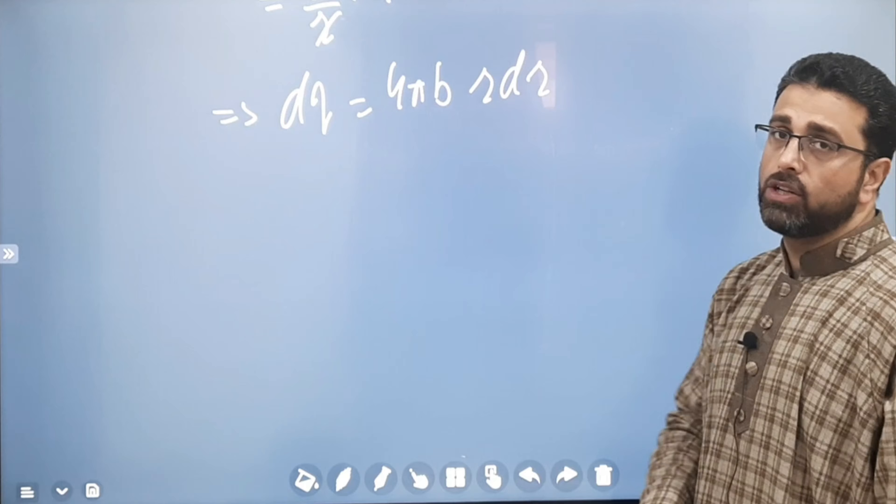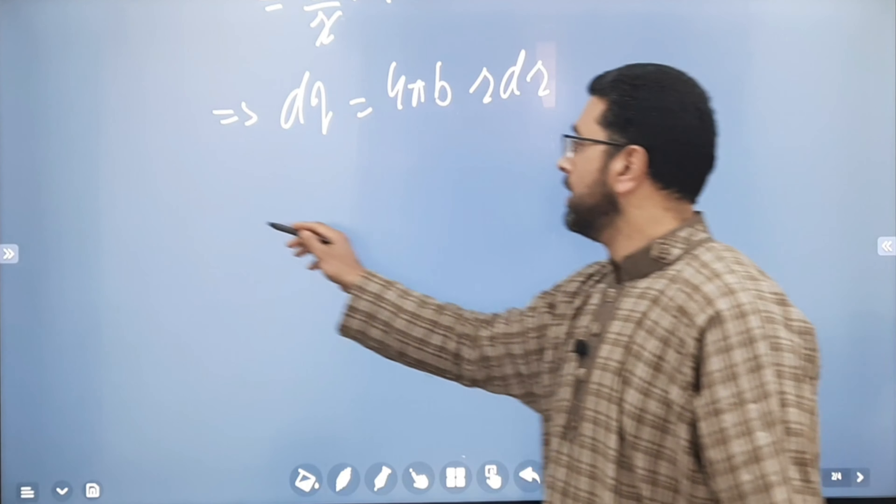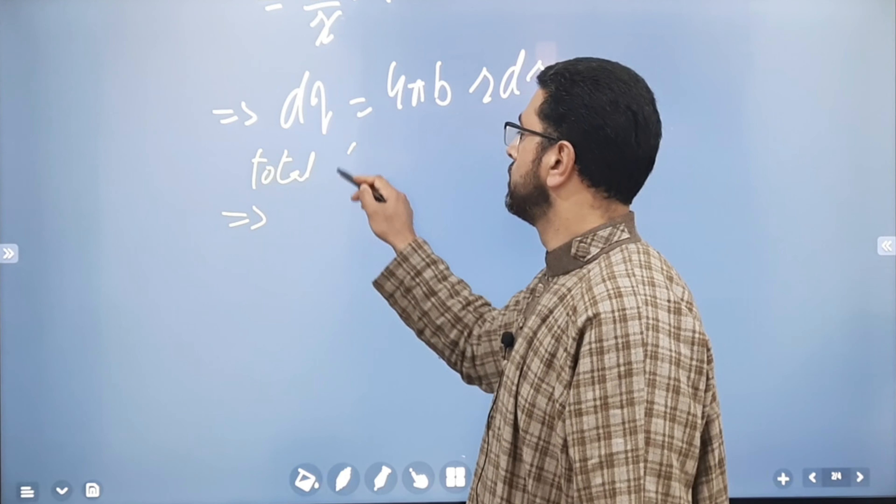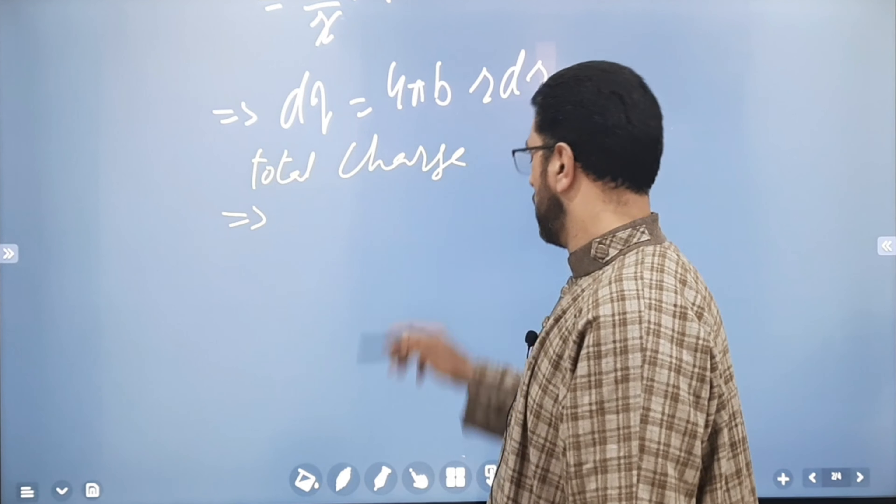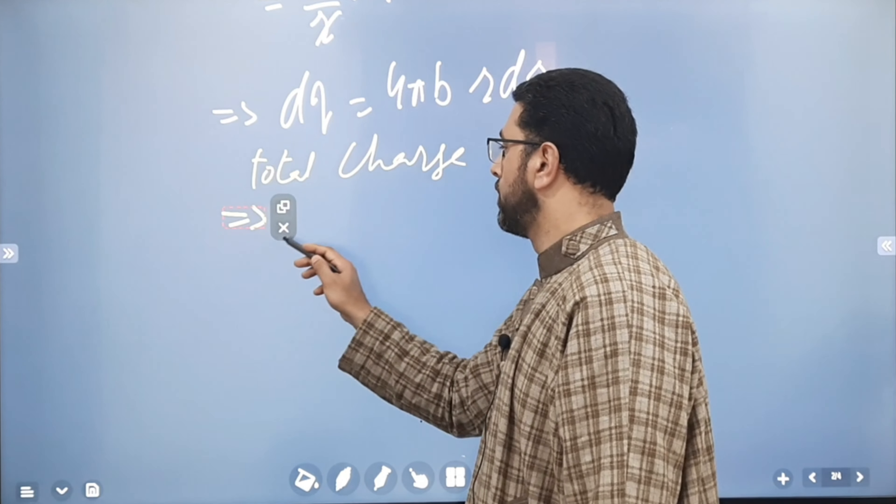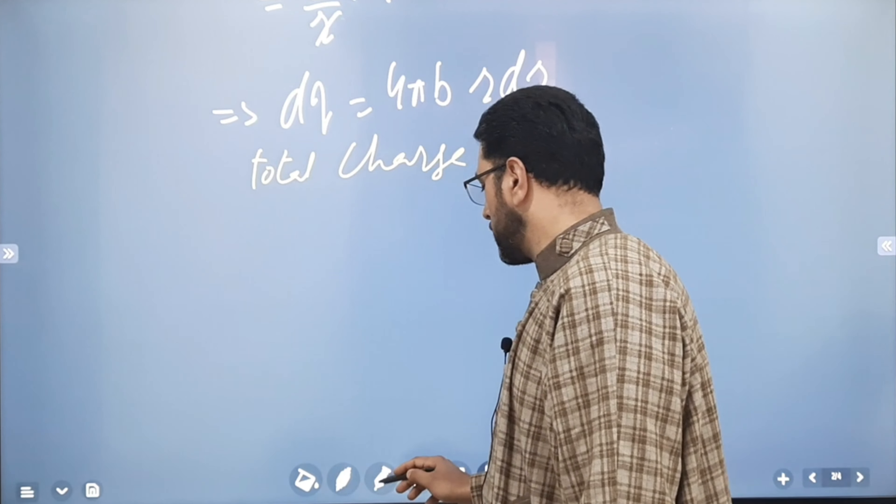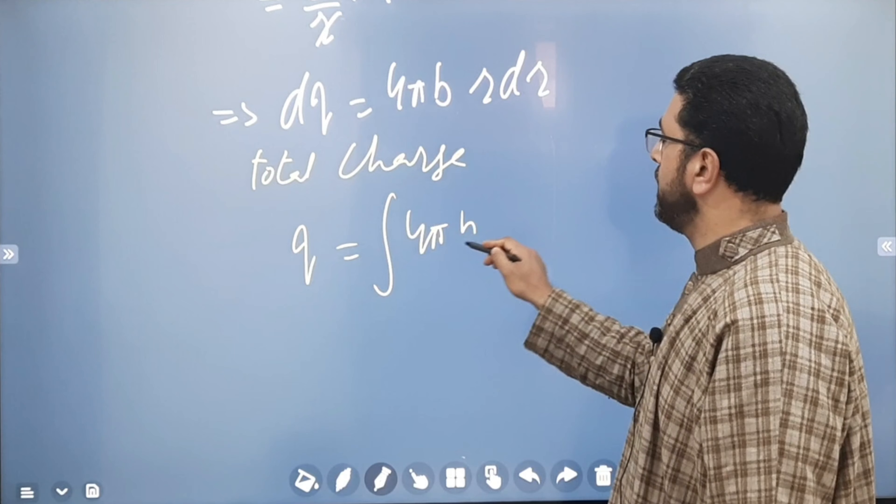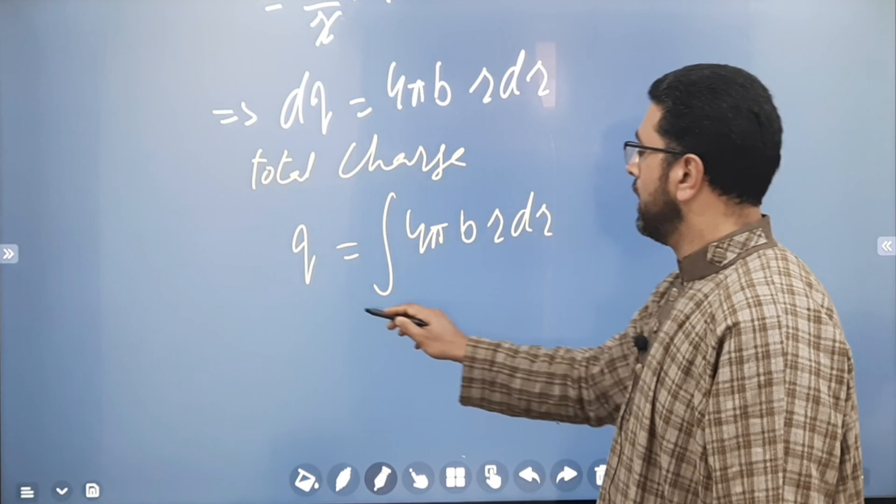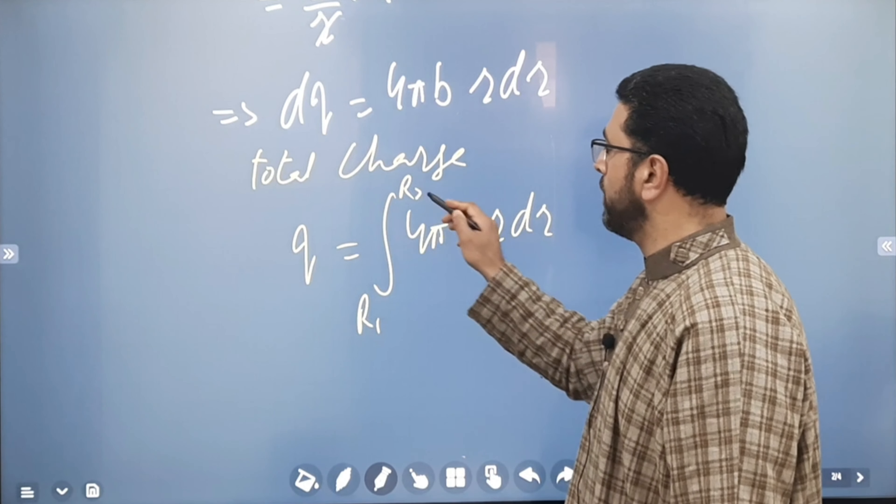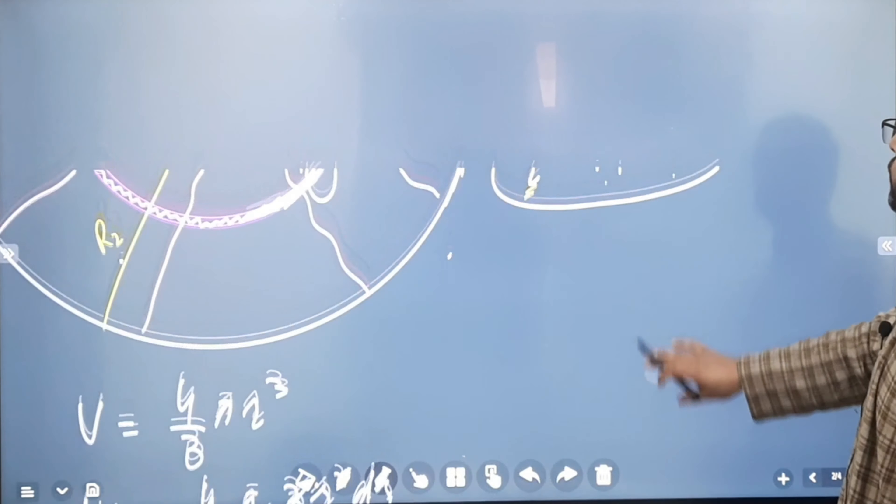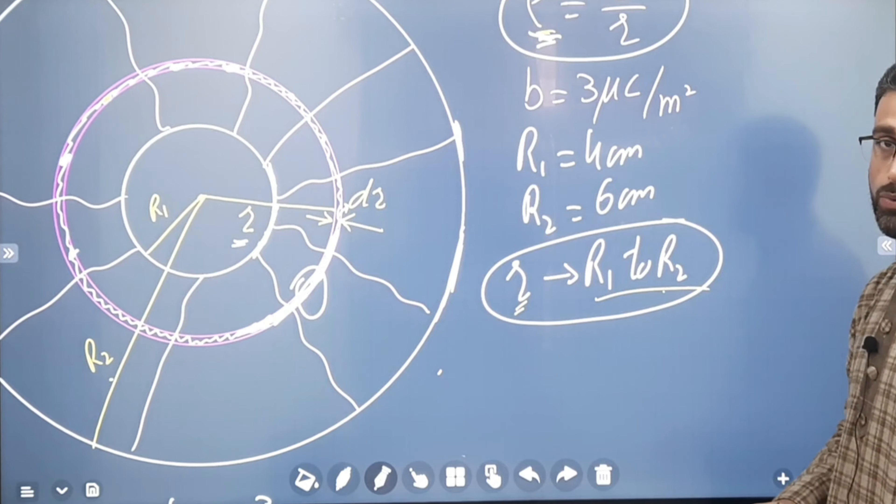What is the total charge of the spherical shell? Simply integration of this one. This implies total charge is given by Q is equal to integration of 4 pi B R dr limits R1 to R2. Remember, little r varies from R1 to R2. Limits of R, small r, R1 to R2.